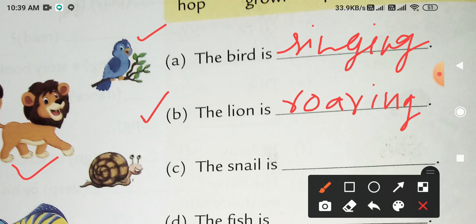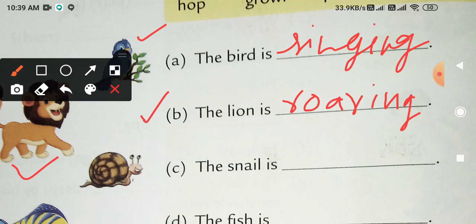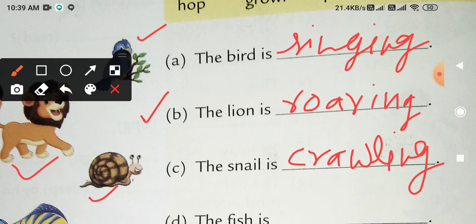Next you have the snail. Snail means ghoonga, this is the picture of snail. The snail is, snail kya kar raha hai? Crawl. So here we will write crawling, C-R-A-W-L-I-N-G, crawling.